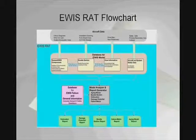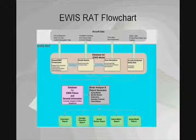Seen here is the EWIS RAT flowchart. Information such as circuit diagrams, wire cut lists, system and subsystem data, and 3D CAD models are important inputs to the EWIS RAT, allowing for analysis of the EWIS. Some of the reports that can be generated include the aging model, bundle section report, co-location report, damage potential report, and failure matrix report.